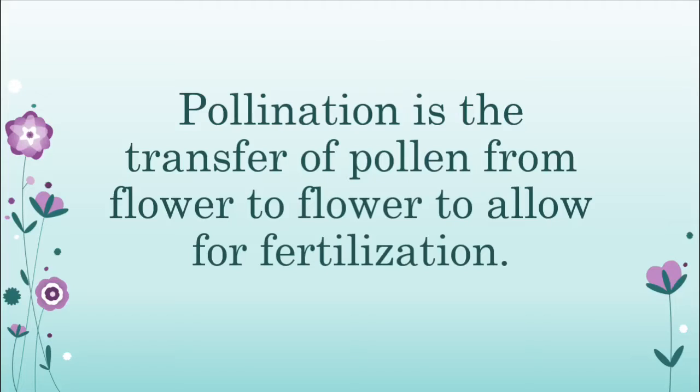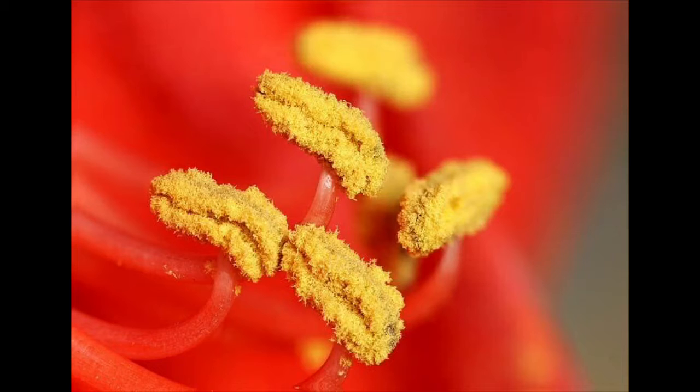Now I know all those parts sound confusing, but when I explain the process and steps to pollination, it will all make more sense. I want you to recall the three parts you just learned because they are going to be mentioned in a couple of seconds. But first, let's review what pollination means one more time. Pollination is the transfer of pollen from flower to flower to allow for fertilization, or the making of more seeds. You guys have been hearing the word pollen a lot, and pollen is the yellow powdery substance that causes plants to form their seeds.